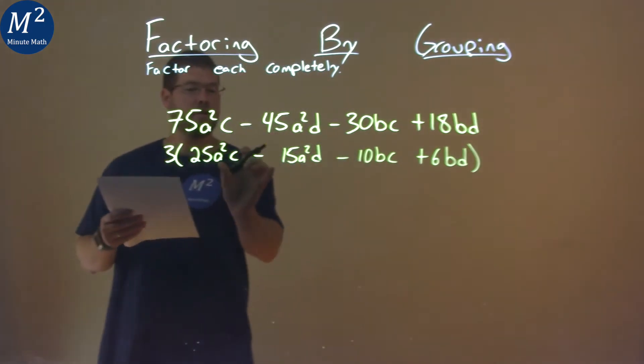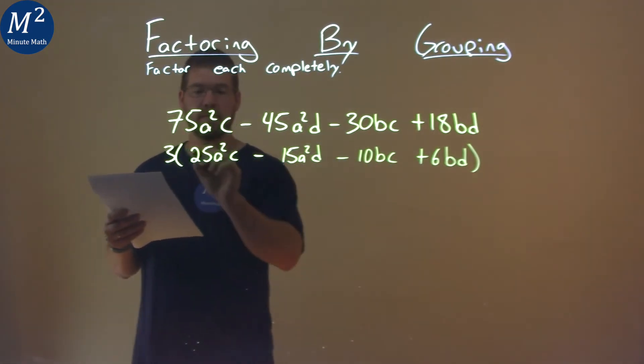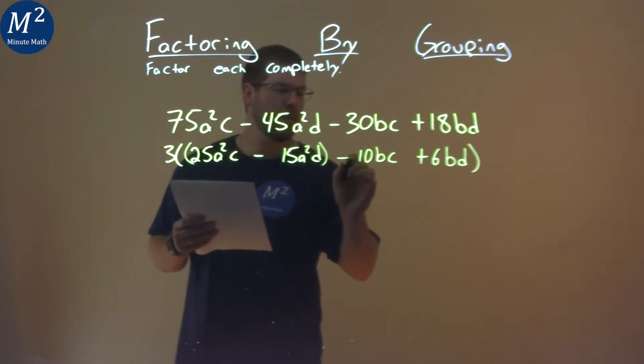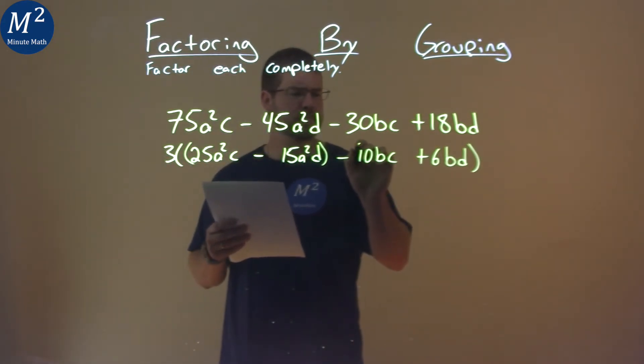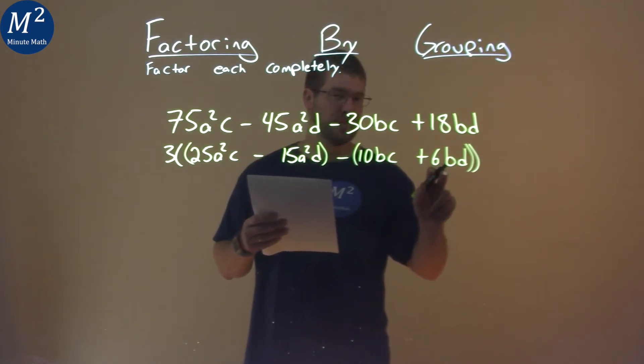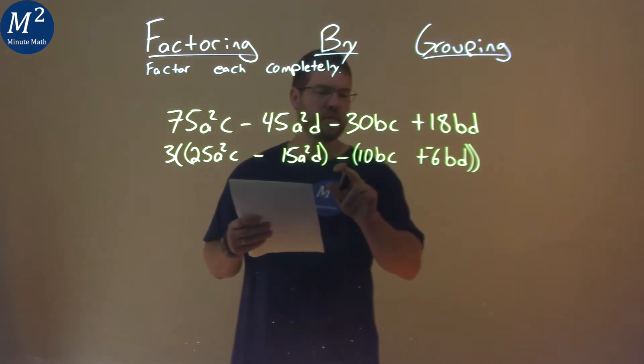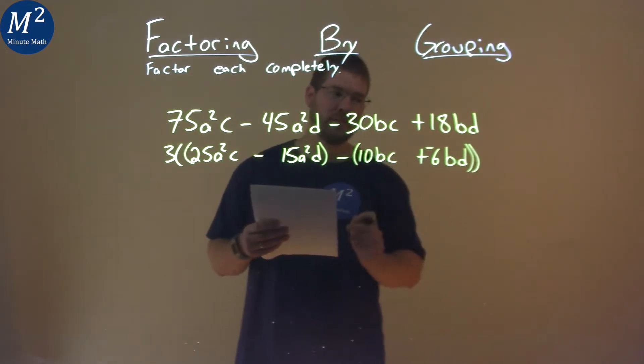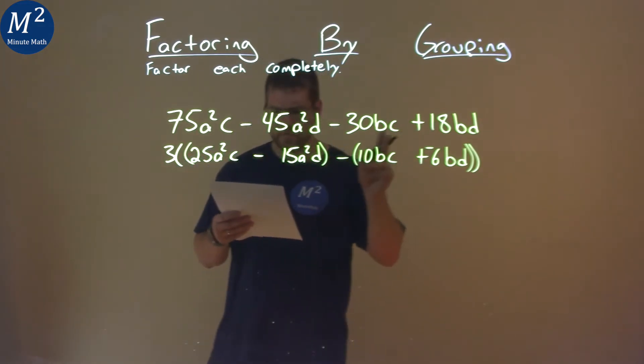Now I'm going to group the first two parts and the second two parts. When I put a parenthesis on the second two parts, that minus sign will have to be distributed to both parts, but I want to make sure that there's a positive 6bd after that. So by putting this in as negative 6bd, when I distribute the minus sign to this part, it will then be a positive. Don't forget that.